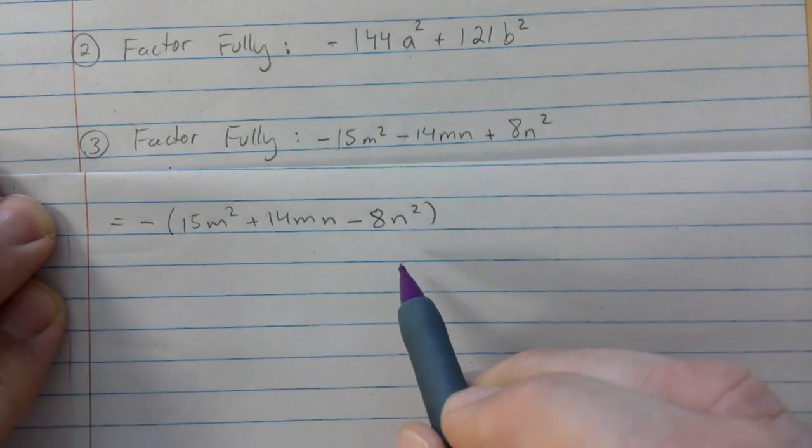Okay, so that's that. Question three, factor fully. We're gonna take out the negative, and that will leave me with 15m squared plus 14mn minus 8n squared. So it's a multi-variable situation, doesn't change the way we approach it. There's no way we can take out a GCF.